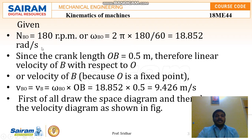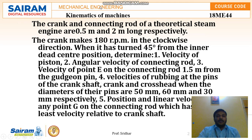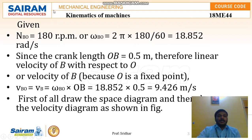First, the speed at point B (N_BO) is 180 rpm. The angular velocity omega_BO equals 2π N / 60, which gives 2π × 180 / 60 = 18.852 radians per second.